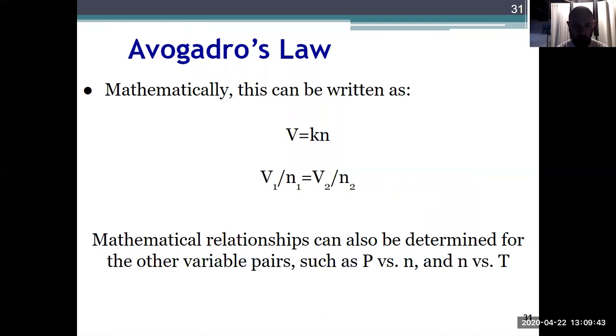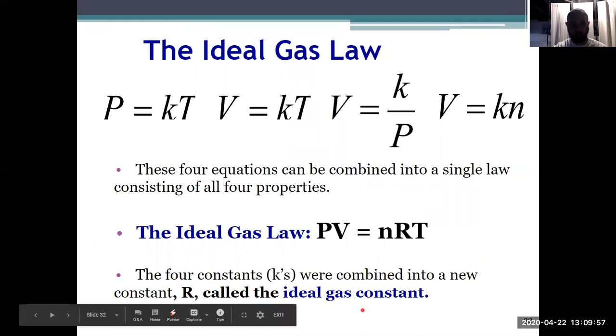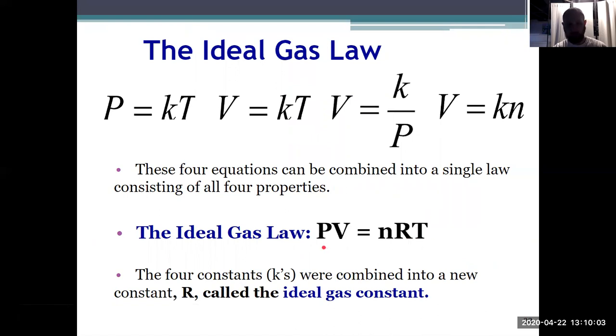So now if I take all four of those laws together—Amonton, Charles, Boyle, Avogadro—I can combine them into one law where all four relate together: PV equals NRT. It's the same P we've been using: pressure in atmospheres. V is volume in liters. N is moles. T is temperature in Kelvin. And R is a constant. What that constant comes from is combining all of those other K's that were constants, and now we put it into one new constant called R, and that's known as the ideal gas constant.